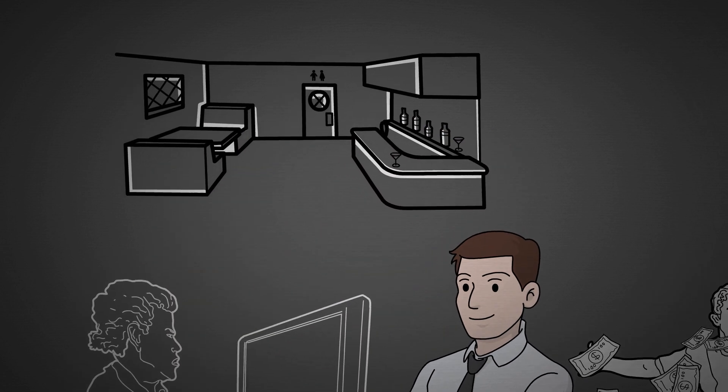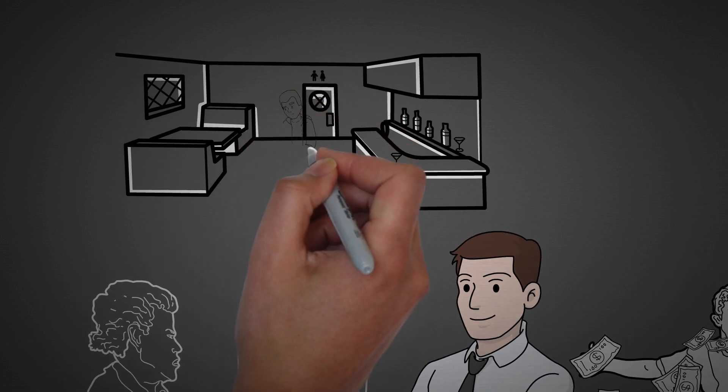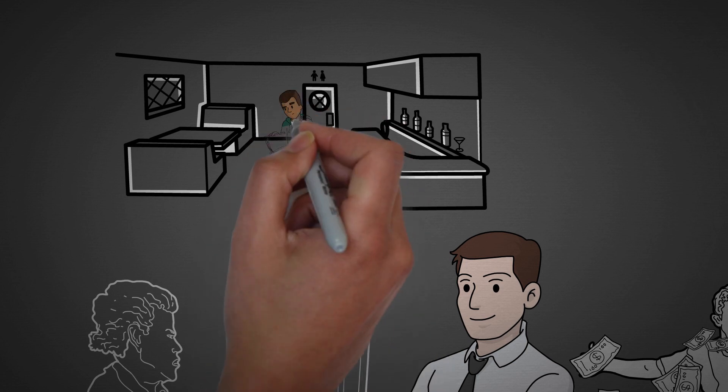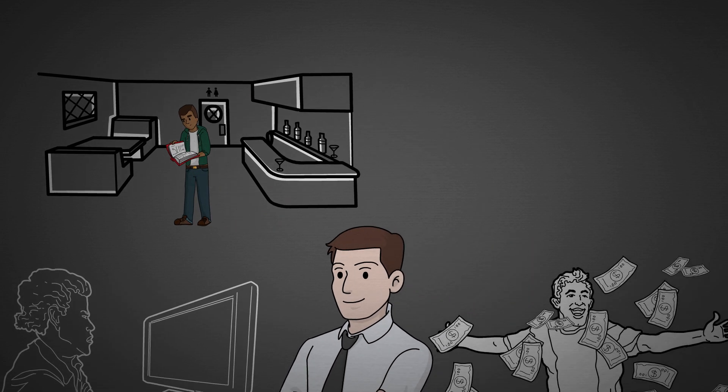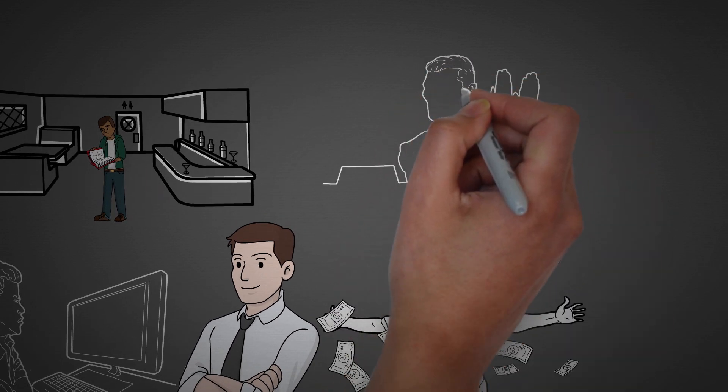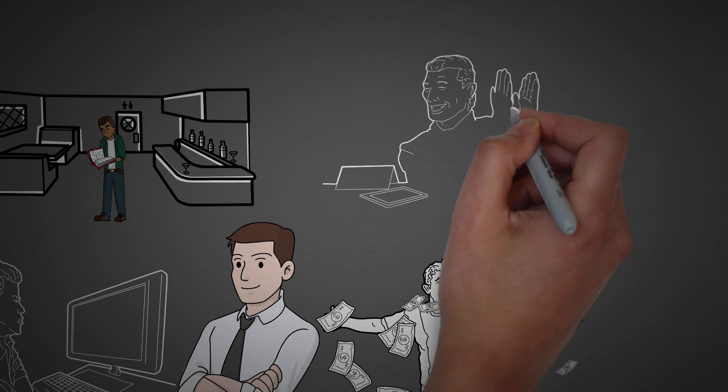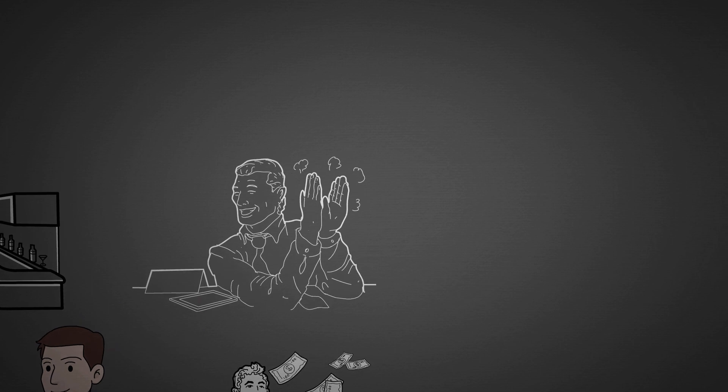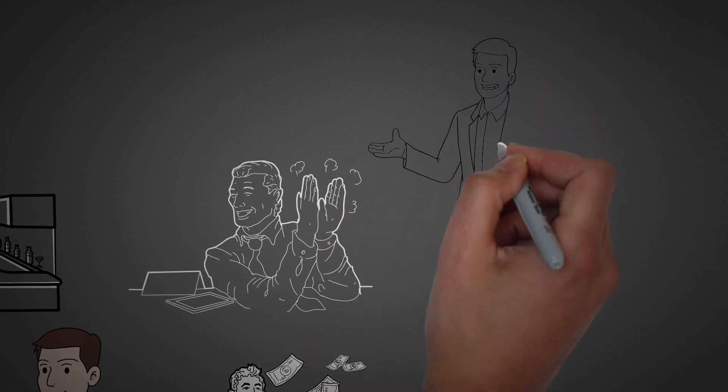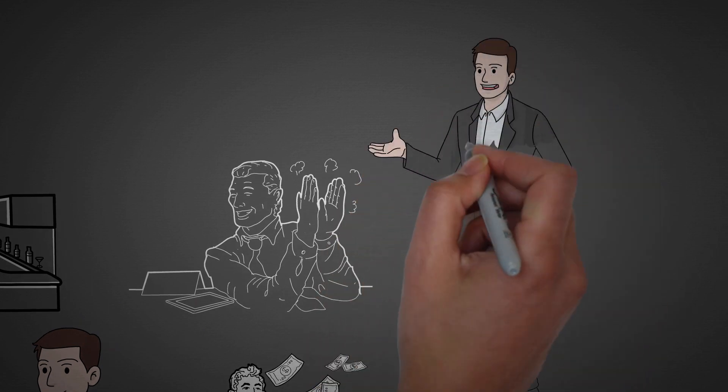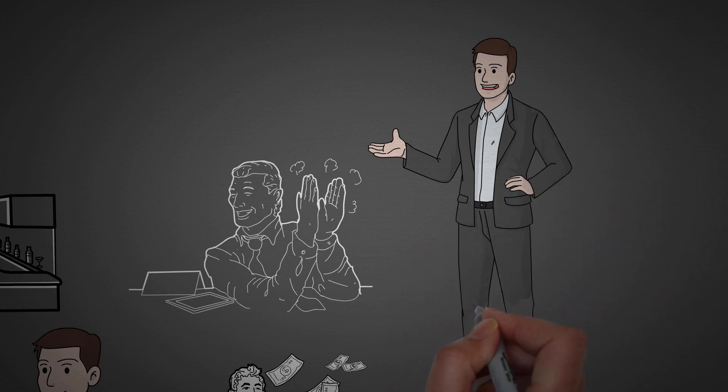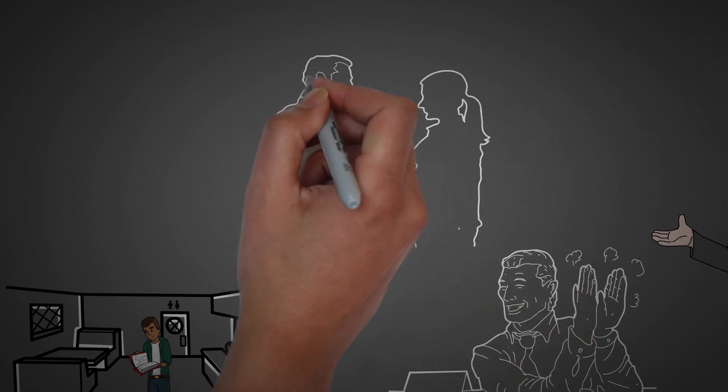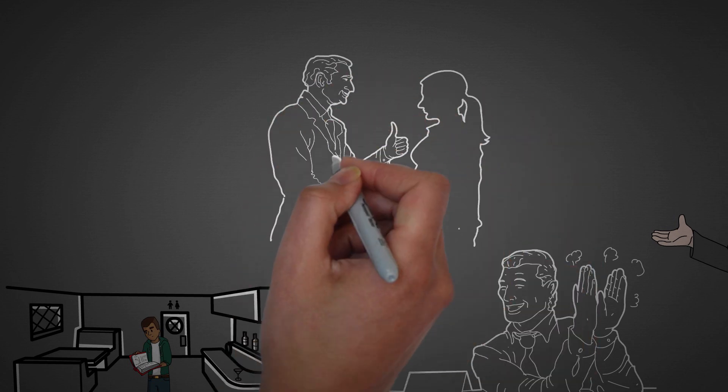He says, bad habits repeat themselves again and again, not because you don't want to change, but because you have the wrong system for change. When we talk about change, it's like peeling an onion. It happens layer by layer. You've got three essential layers: outcomes, processes, and identity. First up, we've got the outer layer, outcomes. This is where we're all about hitting targets. Drop 10 pounds, write a novel, win that award. Yeah, that's all well and good, but it's sort of a one-and-done deal.